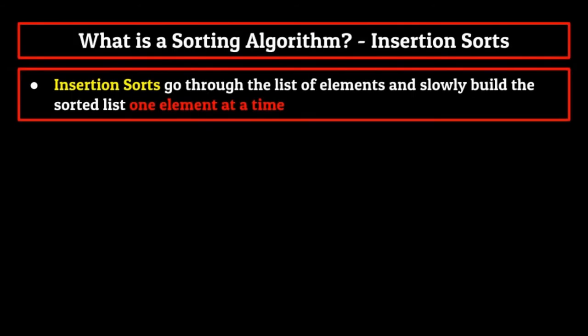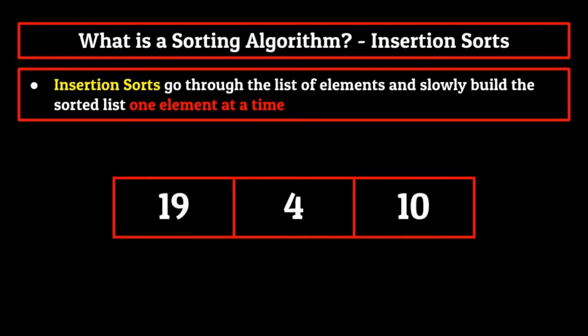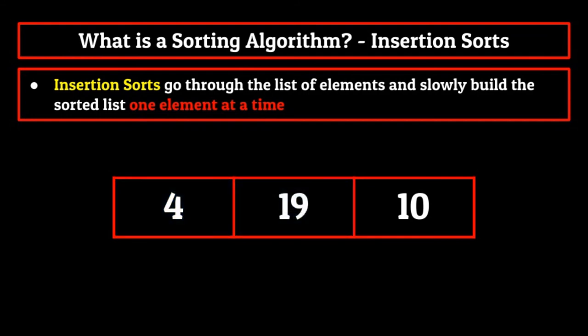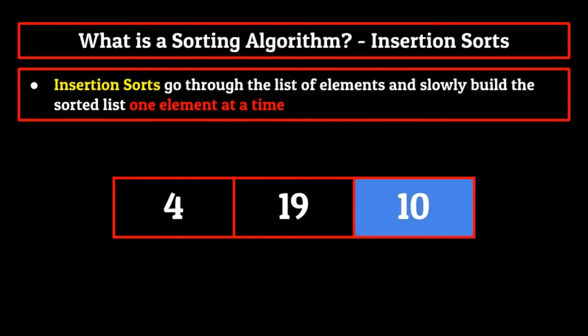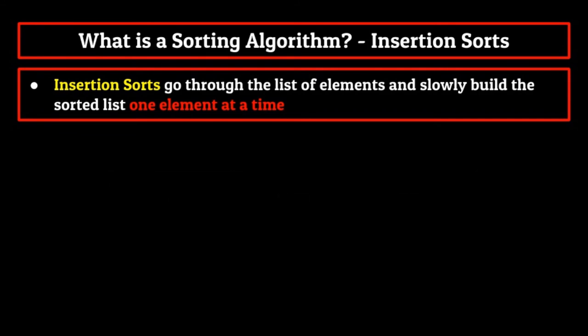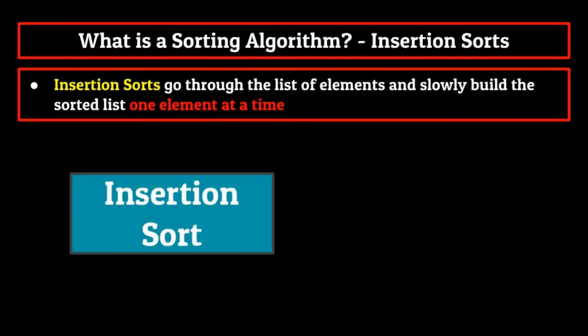The next type of sorting algorithms that we'll cover are insertion sorts. These algorithms go through the list of elements and slowly build the sorted list one element at a time. They do this by finding the smallest non sorted element within the list and placing it at the first location of the list. Then they repeat this process for every element in the set of data until it is sorted. The two insertion sorts that we'll talk about are insertion sort and shell sort.